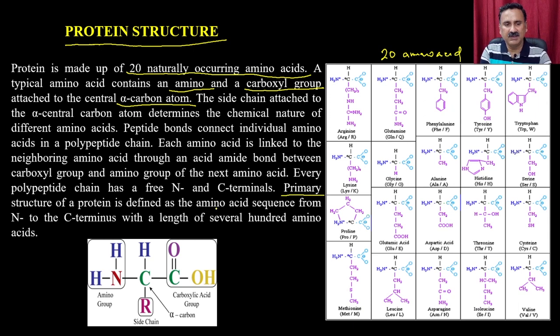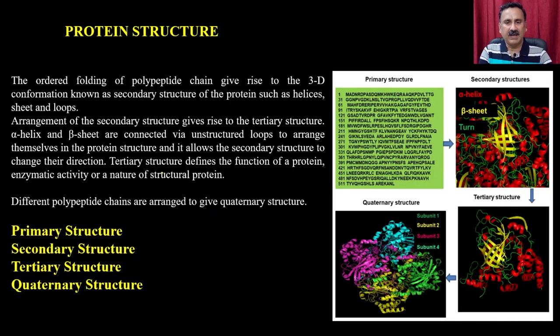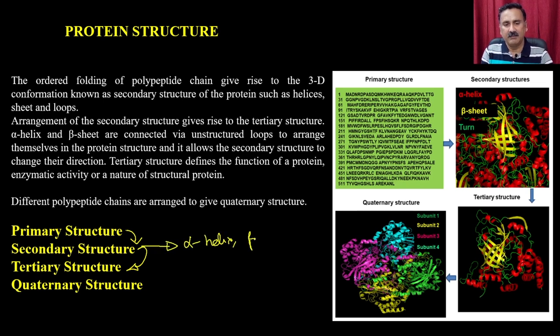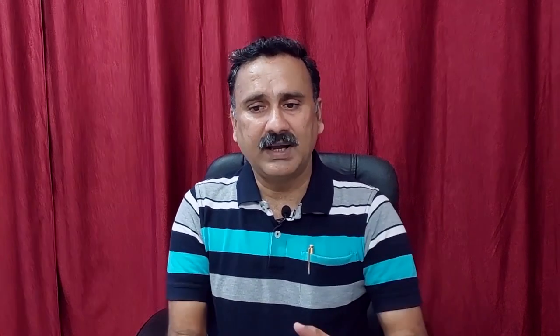The primary structure of a protein is defined as the amino acid sequence from the N to the C terminus, with a length of several hundred amino acids. The primary structure folds into the secondary structure, and the secondary structure folds into a tertiary structure. Within the secondary structure we have alpha helix, beta sheets, and turns. With the help of turns, alpha helices and beta sheets form different types of super secondary structures, which come together to give tertiary structures. In today's lecture, we will see how we can solve the tertiary structures.